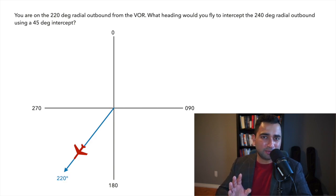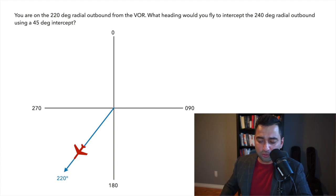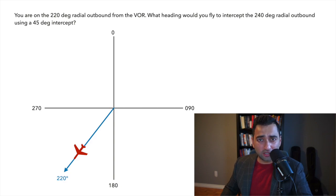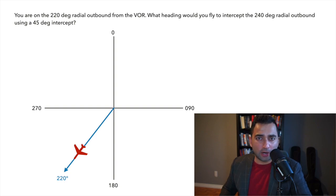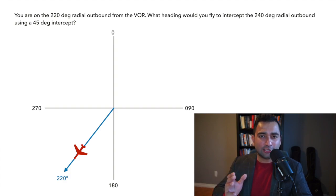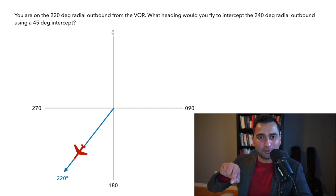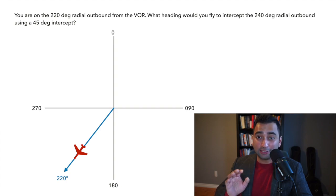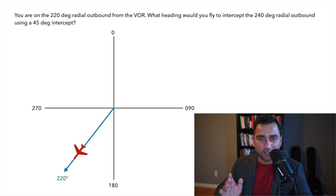The first method is the paper and pencil method. I highly recommend drawing a compass rose on a piece of paper. Draw out north, south, east, and west, then input the radial you're currently on. We're currently on the 220 degree radial, so draw it out on the piece of paper. I recommend drawing the aircraft's heading in the same direction as the outbound radial. The heading does not matter for VOR purposes — you can be in any direction on that same radial — but to keep things simple and avoid confusion, keep the aircraft heading going outbound on that radial.